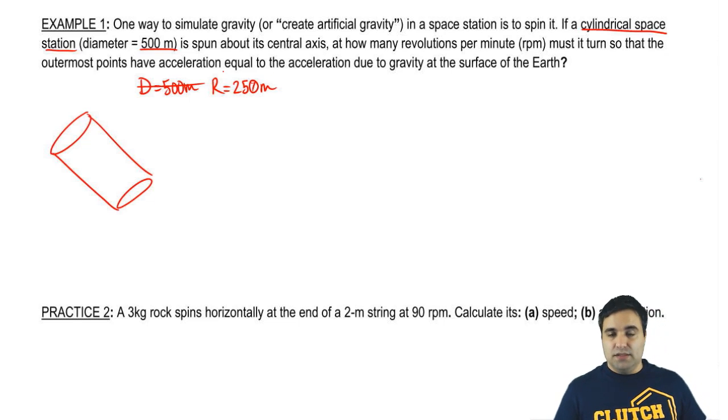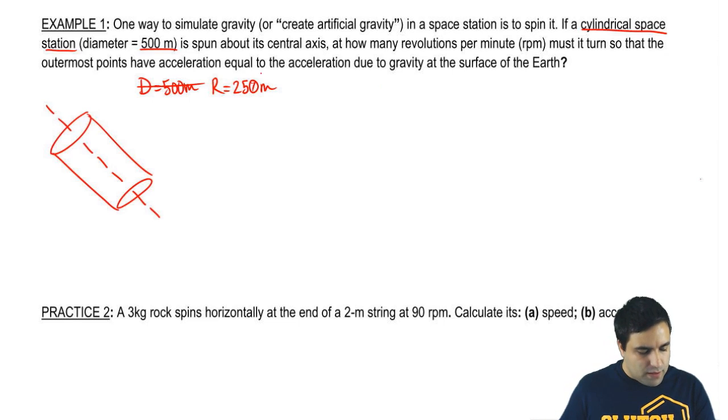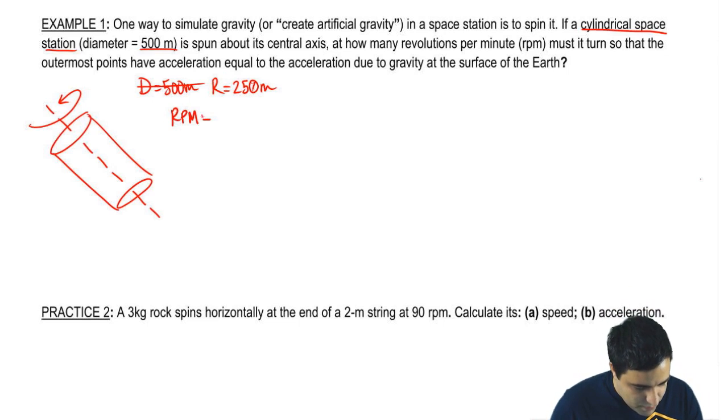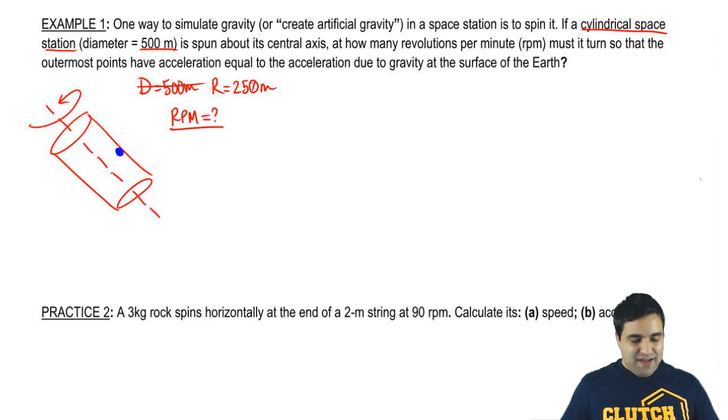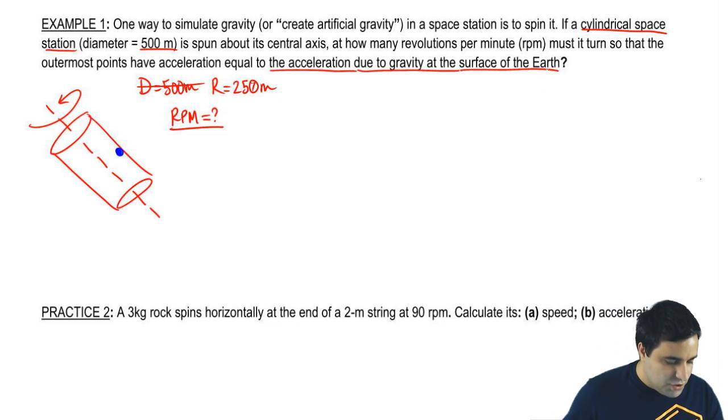It's spun about its central axis. So if you have a cylinder, the central axis is this. It's like the obvious way you would spin a cylinder. The question here is, if it's spun around the central axis, how many revolutions per minute must it turn so that the outermost points have an acceleration equal to the acceleration due to gravity at the surface of the earth. This whole phrase just means little g, which is g on earth, 9.8 meters per second squared, or 9.81.